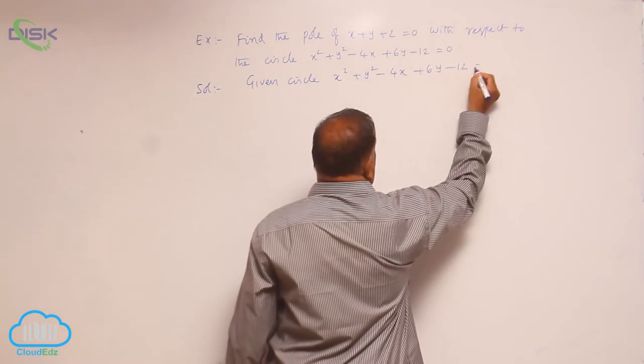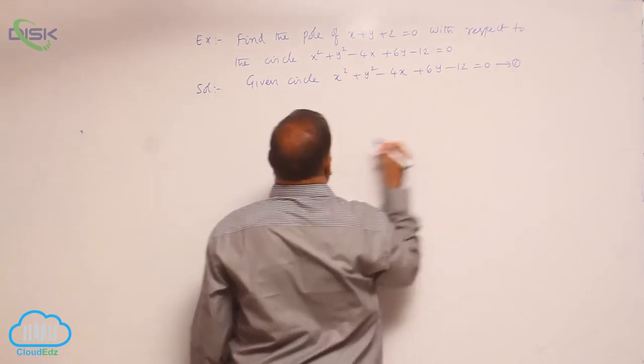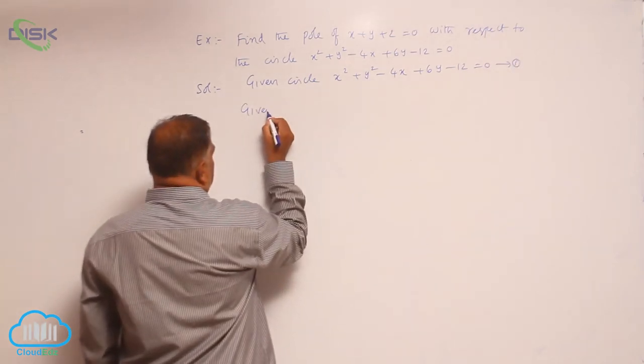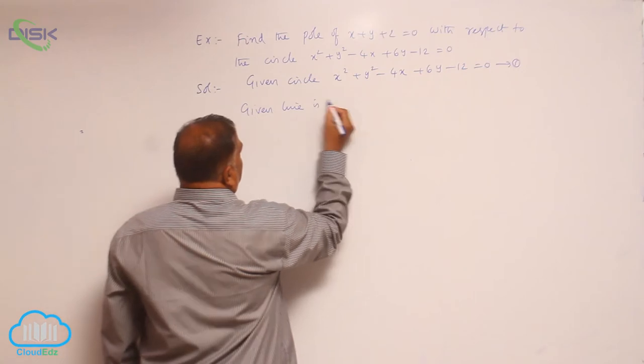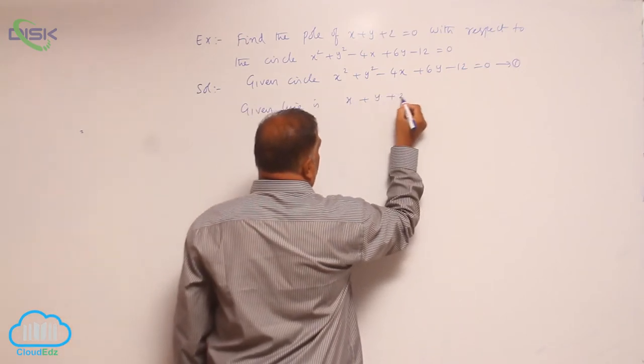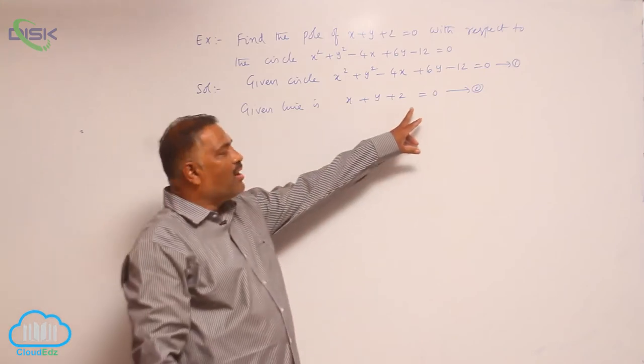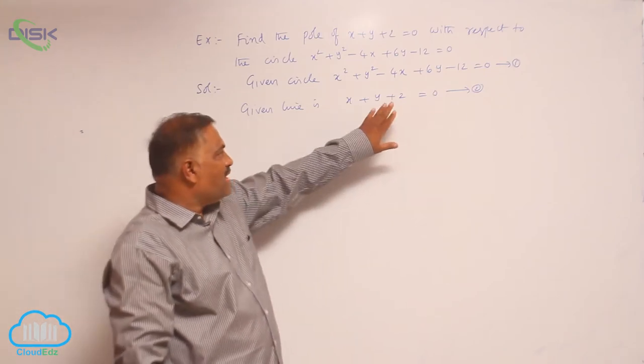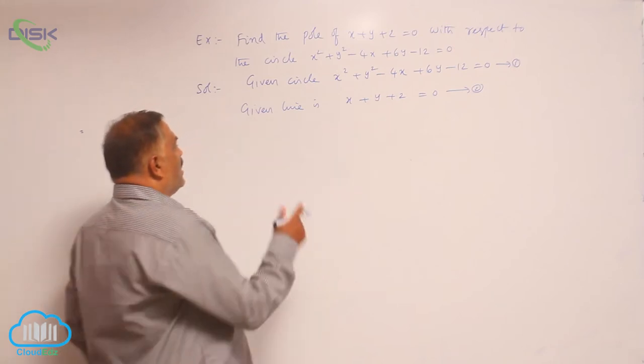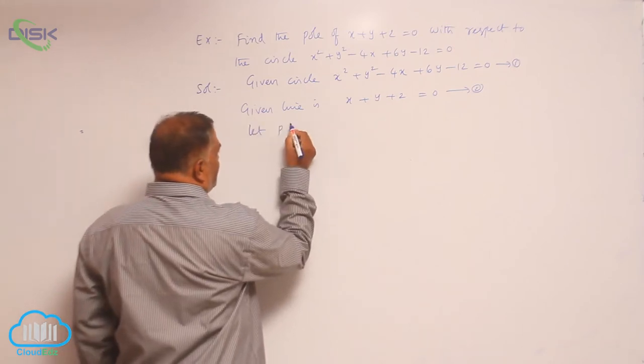Given line is x + y + 2 = 0. Now we need to find out the pole of line 2, that means it is basically a polar. Let P(x1, y1) be the pole of line 2 with respect to circle 1.